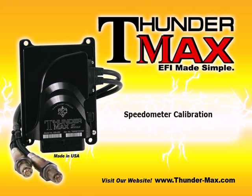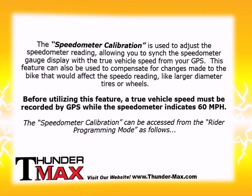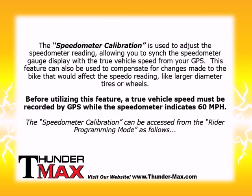Speedometer Calibration. The speedometer calibration is used to adjust the speedometer reading, allowing you to sync the speedometer gauge display with the true vehicle speed from your GPS. This feature can also be used to compensate for changes made to the bike that would affect the speedometer reading, like larger diameter tires or wheels. Before utilizing this feature, true vehicle speed must be recorded by GPS while the speedometer indicates 60 mph.